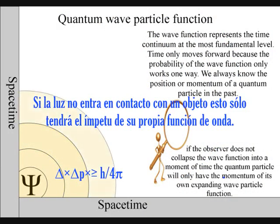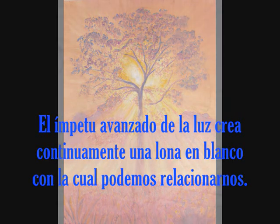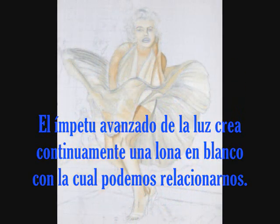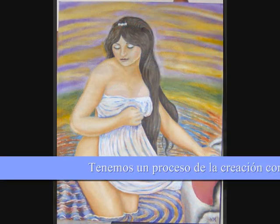If the light does not come in contact with an object, it will only have the momentum of its own wave function. The forward momentum of light is continuously creating a blank canvas for the observer that she or he can participate in. This is what Socrates called a sea of beauty.